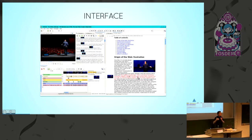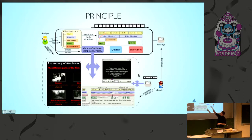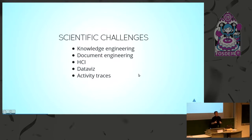The view on the right can be seen as the output of the process. Advin tries to be a tool you can use throughout the whole process, from structuring and analyzing to producing outputs. The key notion is the annotation structure, which is user-defined, and the different views, templates, and queries all put in a single package — the documentary unit that you can exchange independently from the video. We tackled different scientific challenges: knowledge engineering, document engineering, HCI, and data visualization and analysis of activity traces.